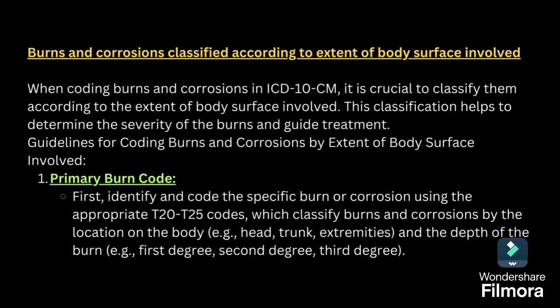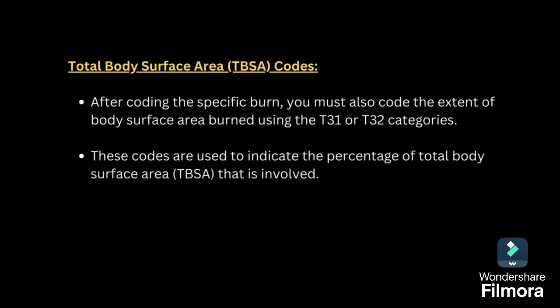Burns and corrosion are classified according to the extent of body surface area involved. This classification helps determine the severity of the burns. First, identify the specific type of burn or corrosion using the appropriate code from T20 to T25. Next, know the laterality and then the total surface area, coding from T31 to T32.